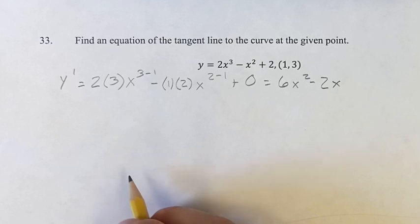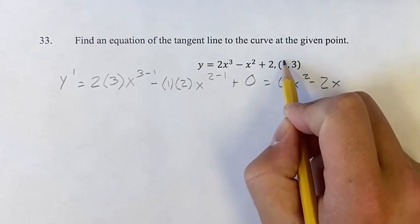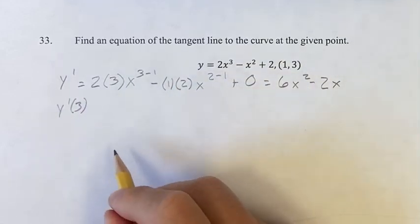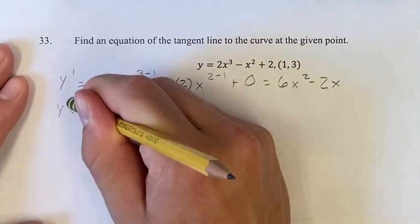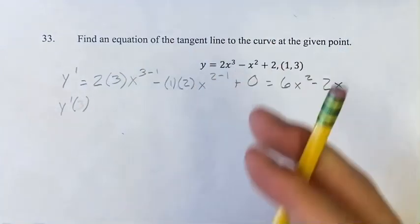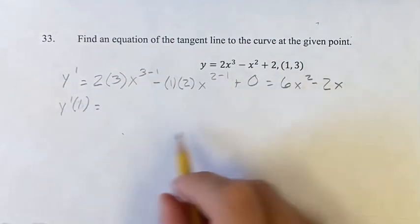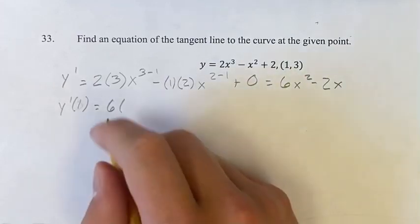Now, if we want to evaluate it at this point, we know that this is x, this is y, so therefore we're finding it. Sorry, not at 3. But x is equal to 1. So what we can do is we can plug in 1 wherever we see x.